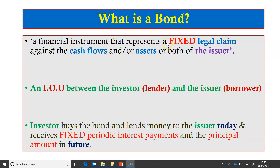A bond is a financial security that represents a fixed legal claim against the cash flows and assets of the issuer. The claim is fixed because the holder of the bond is entitled to receive periodic interest payments and principal from the issuer. The interest rate may be fixed — making it a fixed rate bond — or variable, making it a floating rate bond. The bond is an IOU between the investor, who is the lender, and the issuer, who is the borrower.